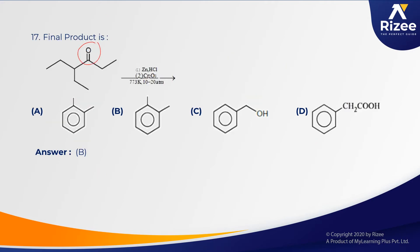Next: an aldehyde is given and the question asks for the product in the presence of an oxidizing agent, giving 1,2-dimethylbenzene — so again Hydrocarbons and Aldehydes, Ketones and Carboxylic Acid are linked. These are the 17 questions asked from Aldehydes, Ketones and Carboxylic Acid on the topic of Preparation and Properties of Carbonyl Compounds across all six shifts of the JEE Mains 2021 February session.